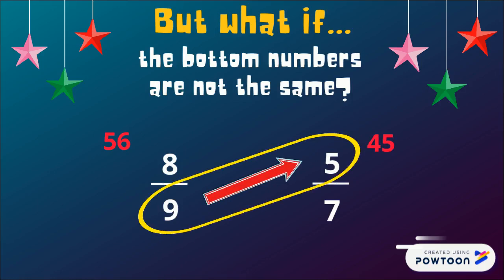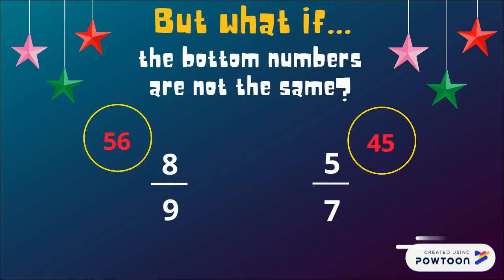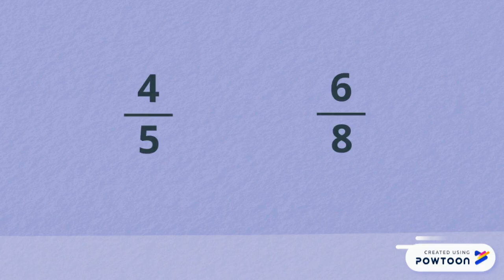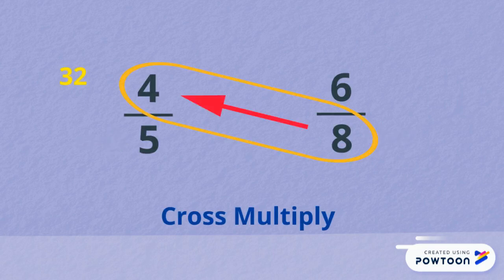Here's another example: four-fifths and six-eighths. The bottom numbers are different, so we can cross multiply. Multiply eight times four to get 32 and five times six to get 30.